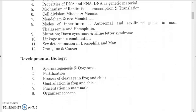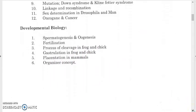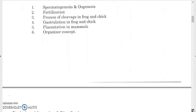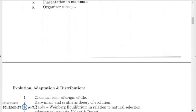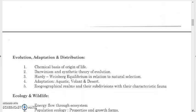For developmental biology, study spermatogenesis and oogenesis — how each process occurs — fertilization (external and internal), the process of cleavage in frogs and chicks, gastrulation in frogs and chicks, placentation in mammals, and the organizer concept.